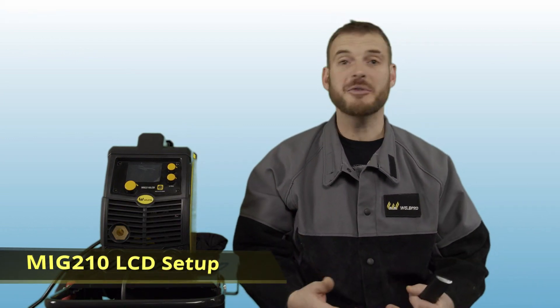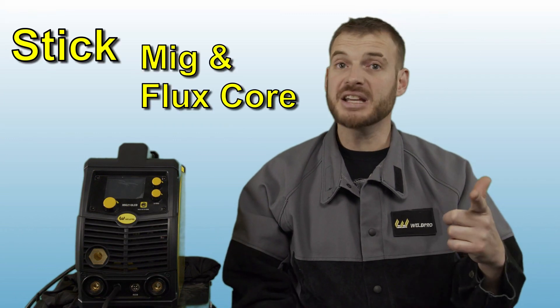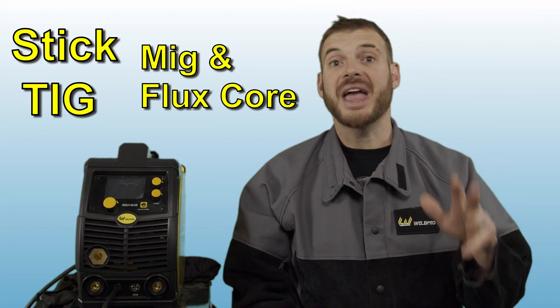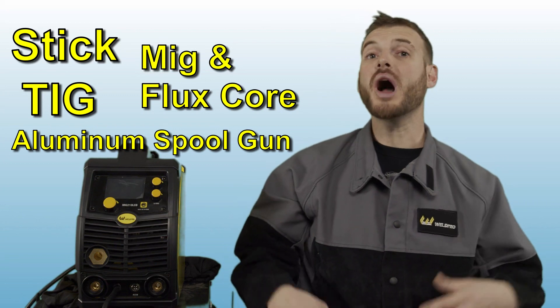Now I want to get into some of the steps that are required to get this machine set up to weld with stick. There will be several parts to this setup series including setting up for stick, MIG and flux core, TIG and aluminum spool gun. So we'll walk through each one of those together that way regardless of what process you want to run you'll be able to set it up accordingly.